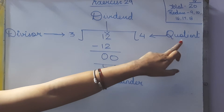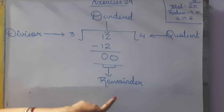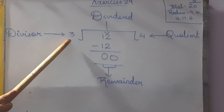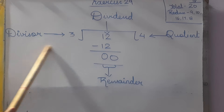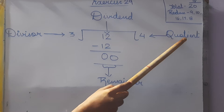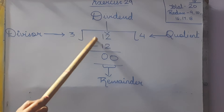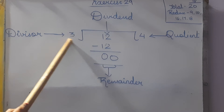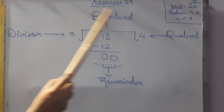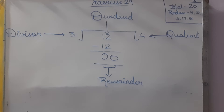The answer we get is the quotient. And after subtracting, the answer we have got is the remainder. So: the number inside is the dividend, the number which is dividing is the divisor, the answer we get is the quotient, and what remains after subtracting is the remainder.